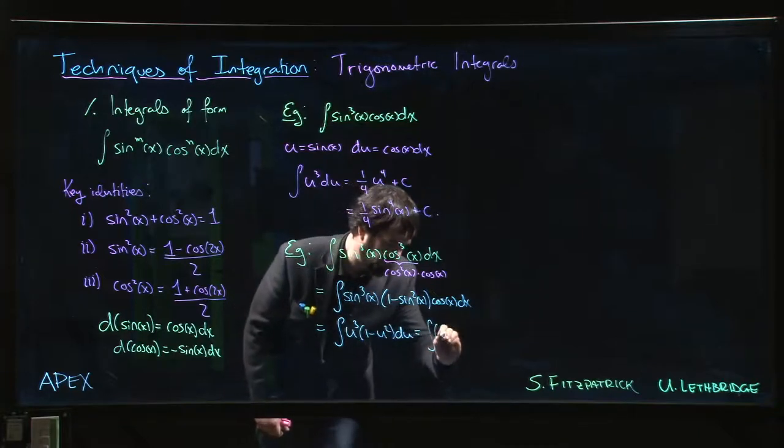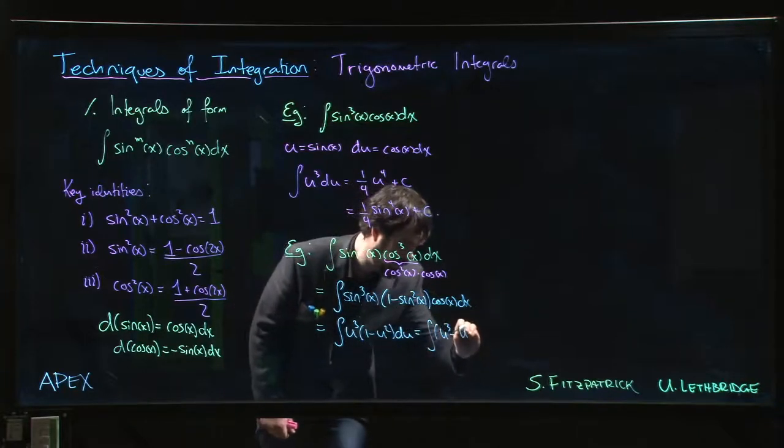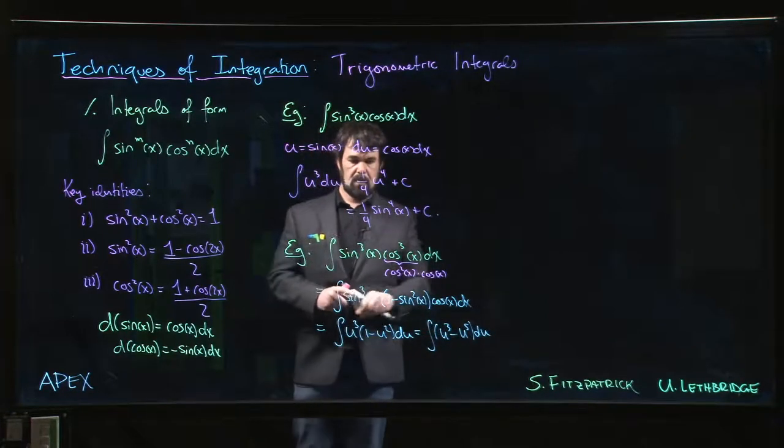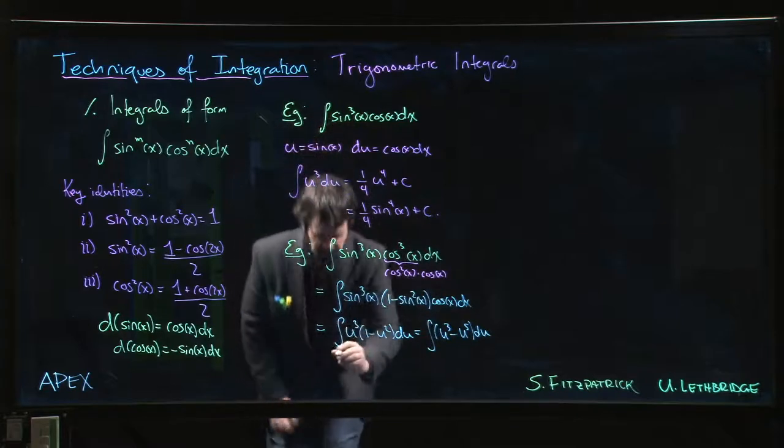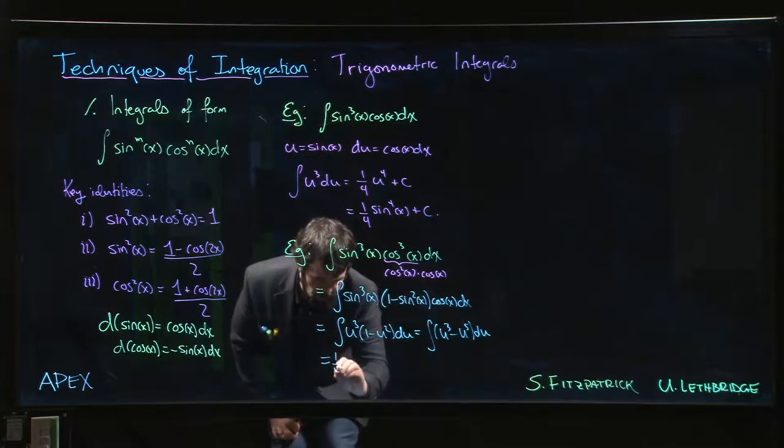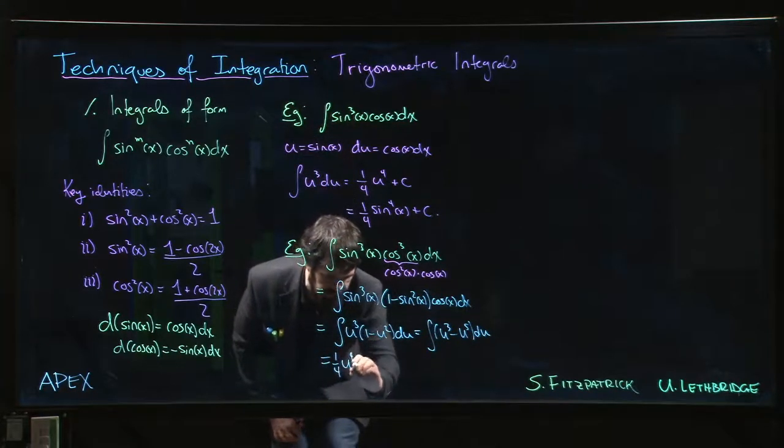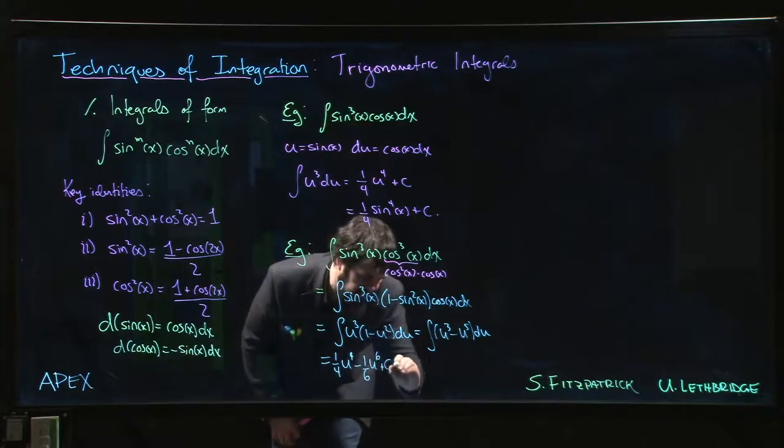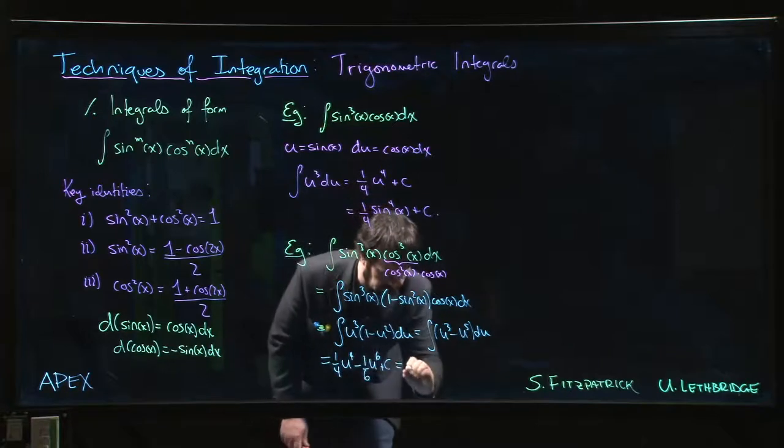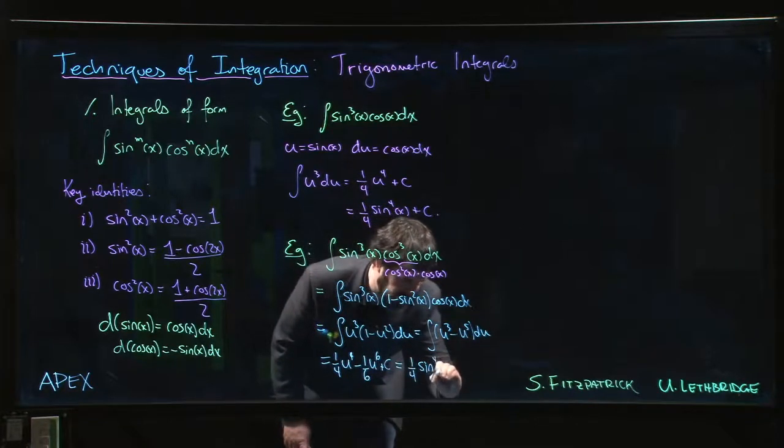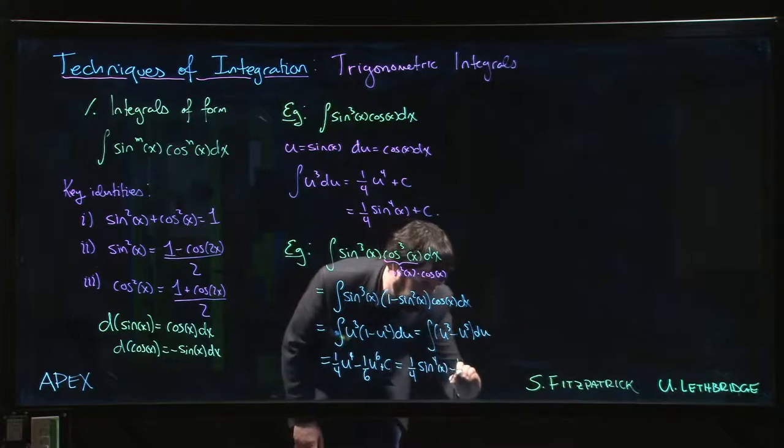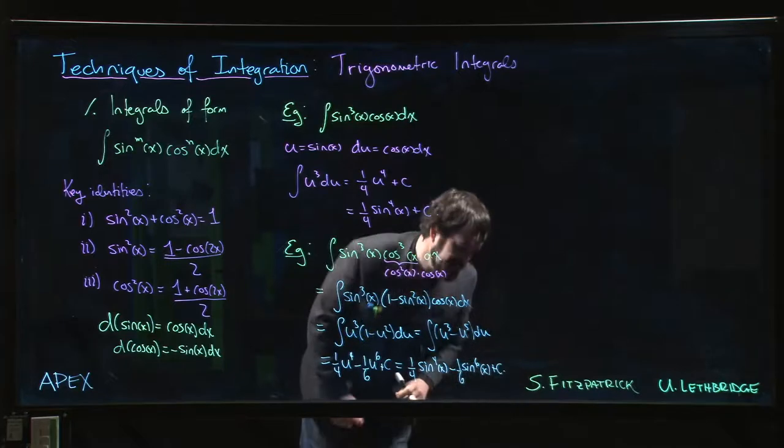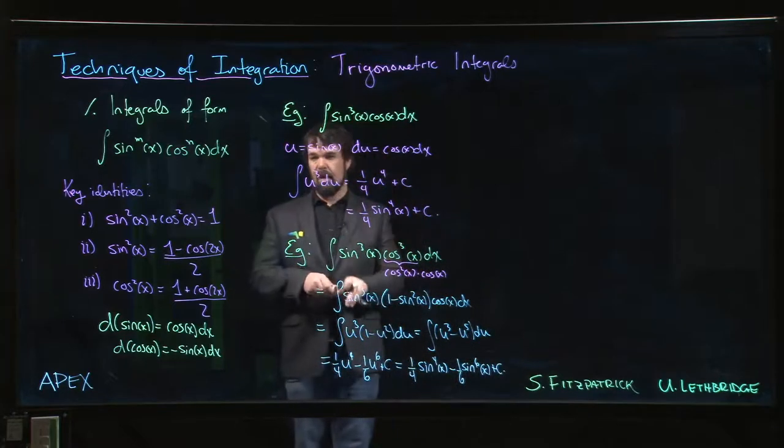Which of course is u cubed minus u to the fifth. So we get our antiderivatives, 1 over 4 u to the 4, 1 over 6 u to the 6, and we put back sine. So 1 over 4 sine to the 4th x, 1 over 6 sine to the 6x, and we have it.